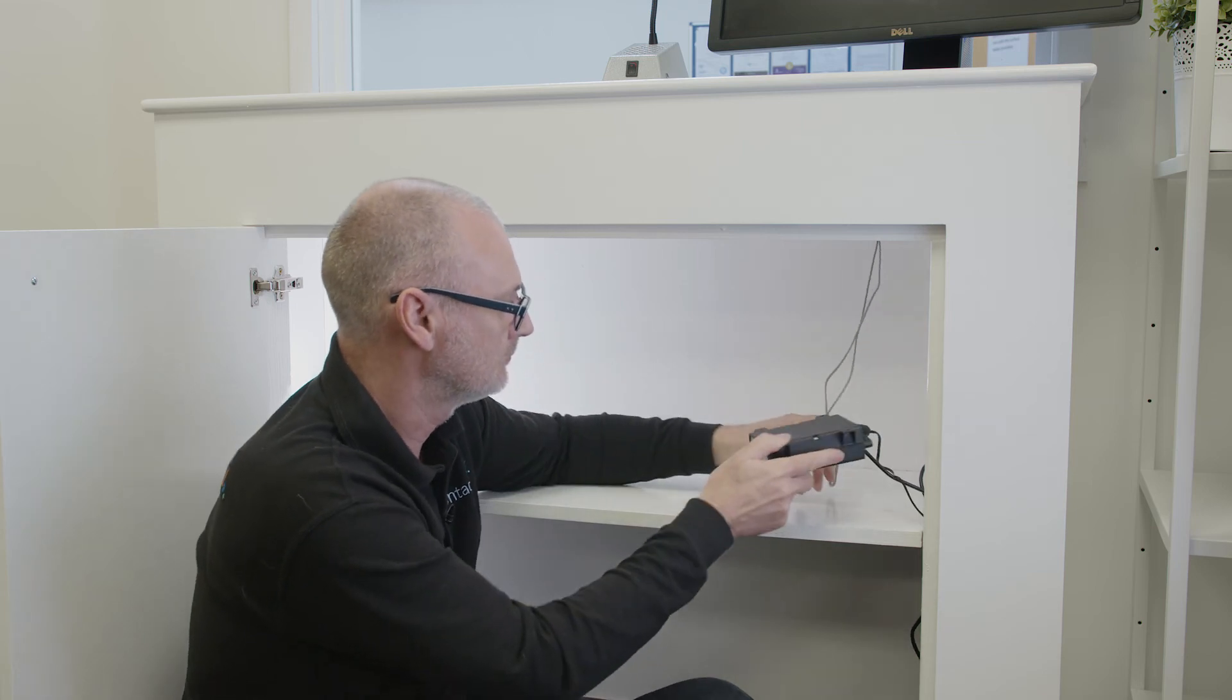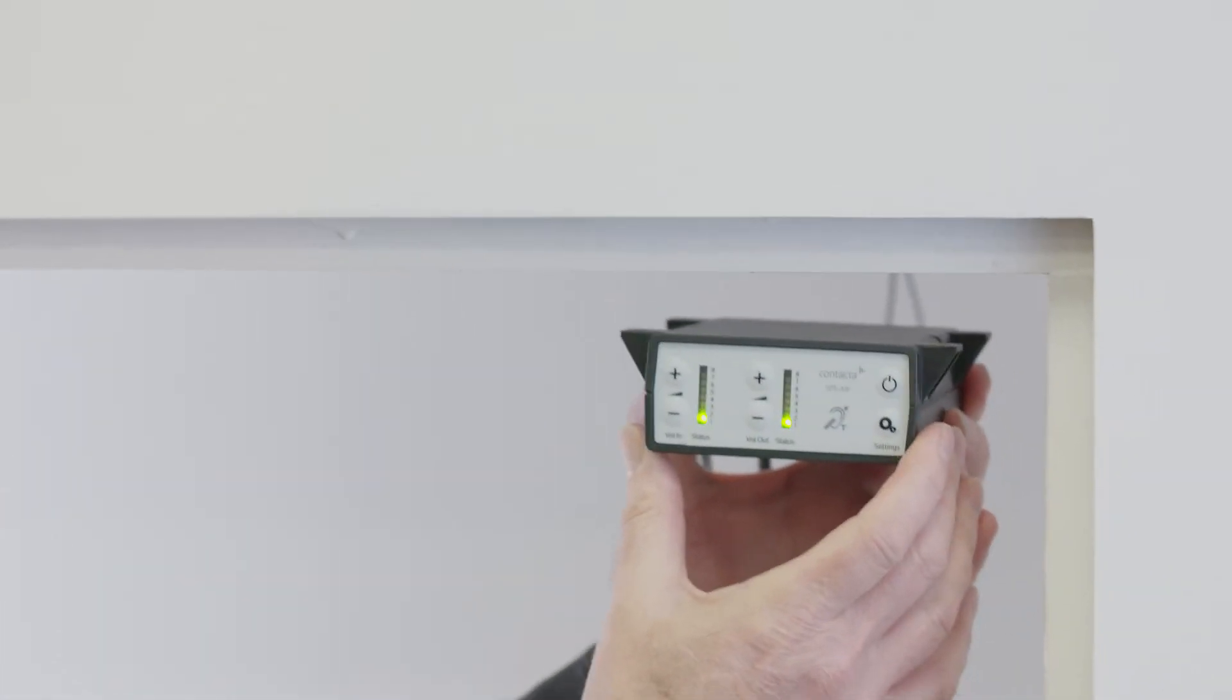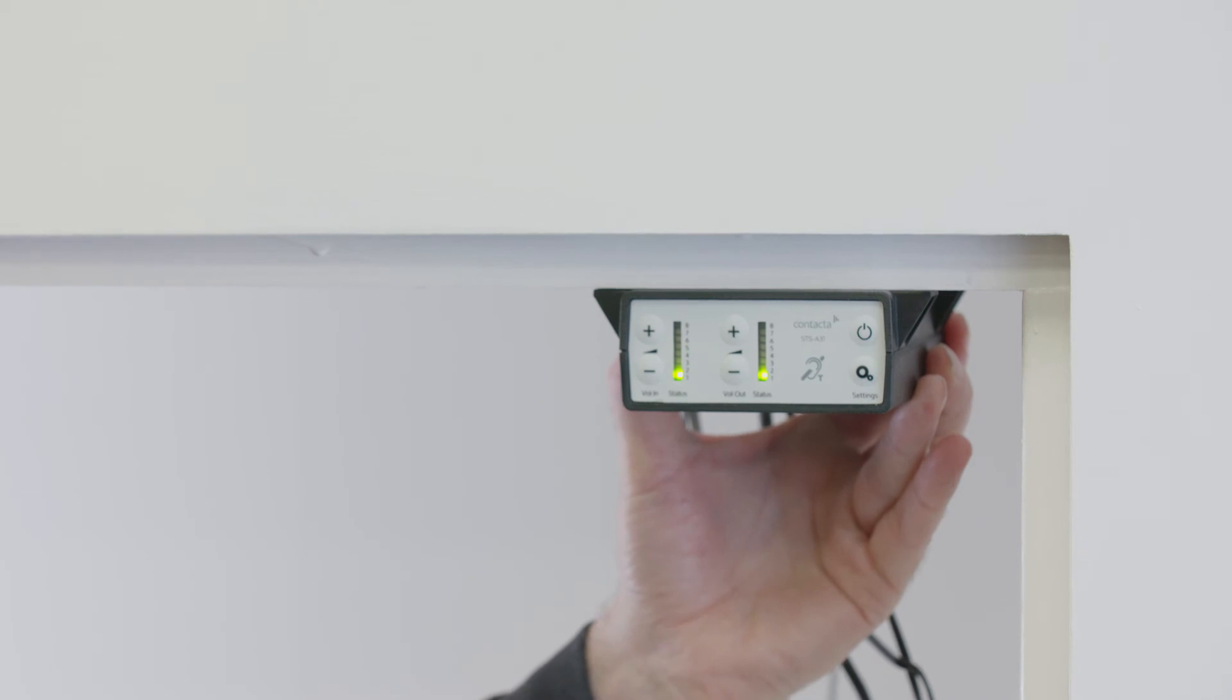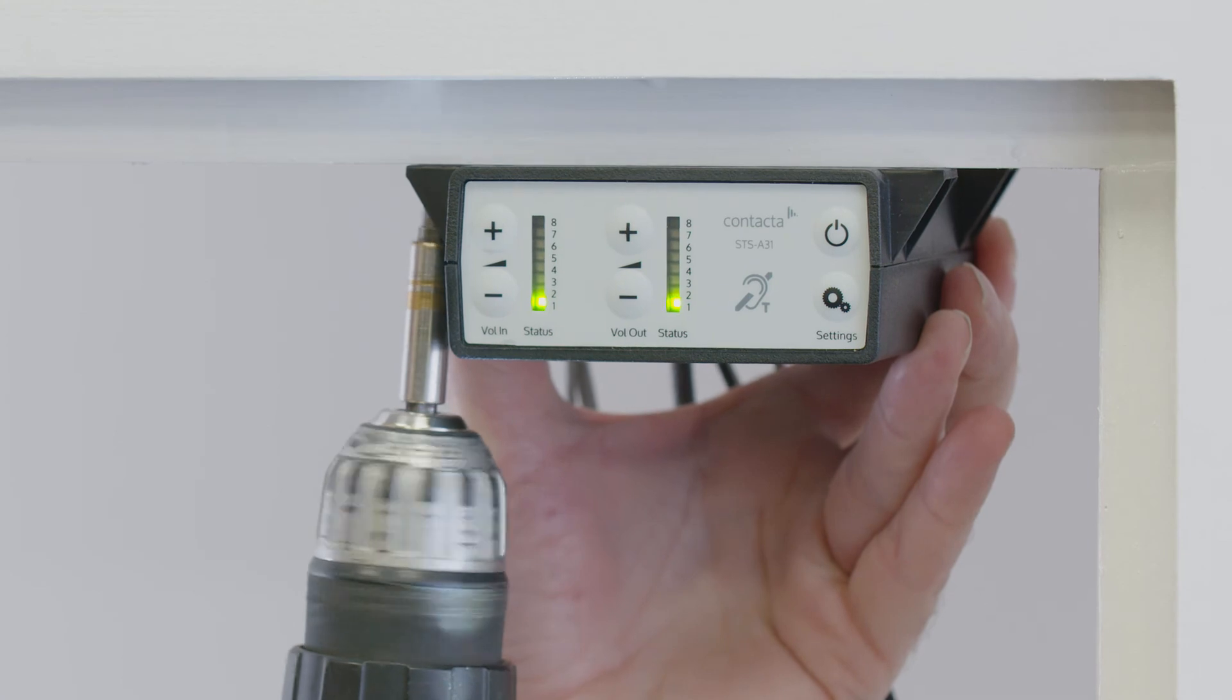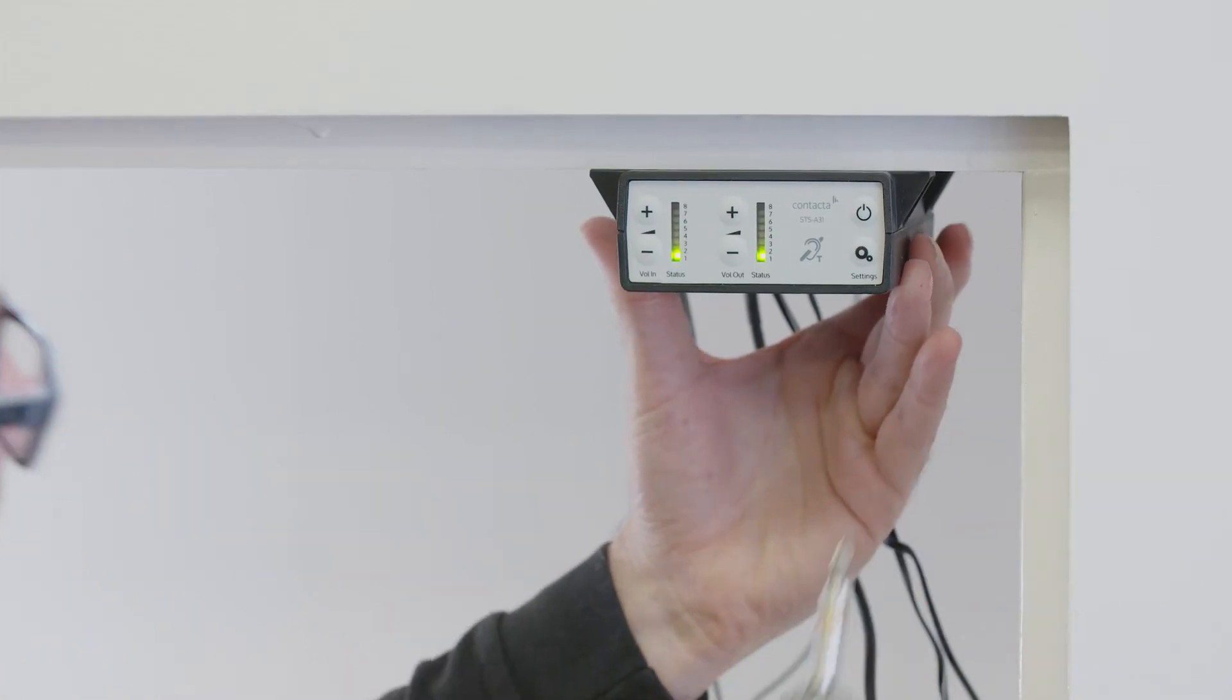Place the amplifier under the staff counter, ensuring that it will not obstruct staff when they are sitting. The amplifier front should face outwards, with adjustment buttons accessible. Drill and fix the amplifier in place using the supplied screws.